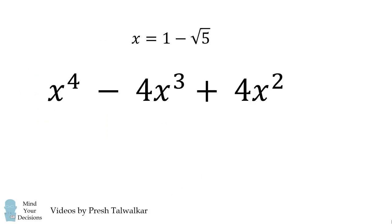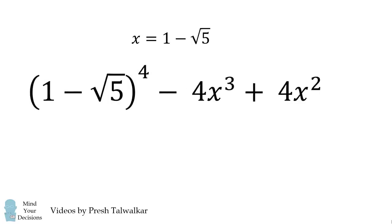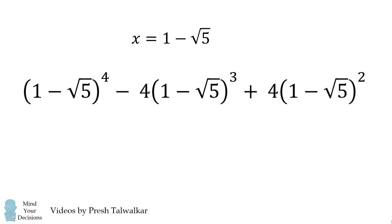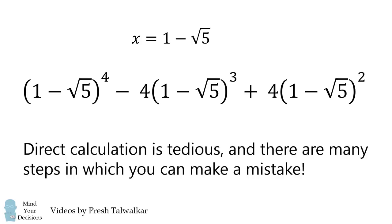So your first instinct might be to directly substitute x equals 1 minus the square root of 5. But if you do that, it'll actually be pretty complicated. Direct calculation is tedious, and there are many steps in which you can make a mistake.